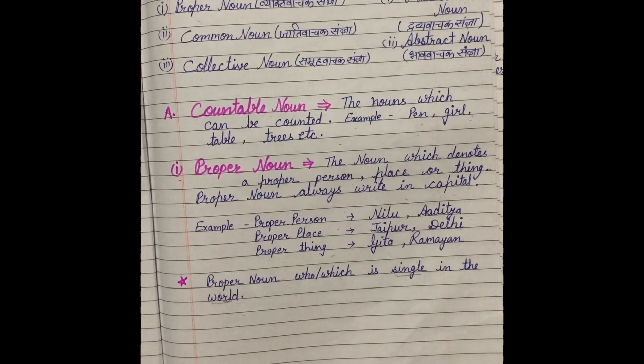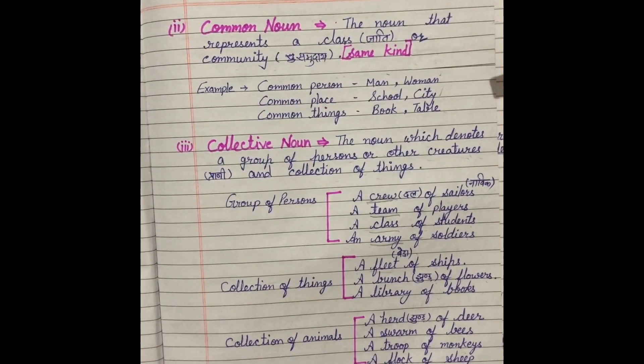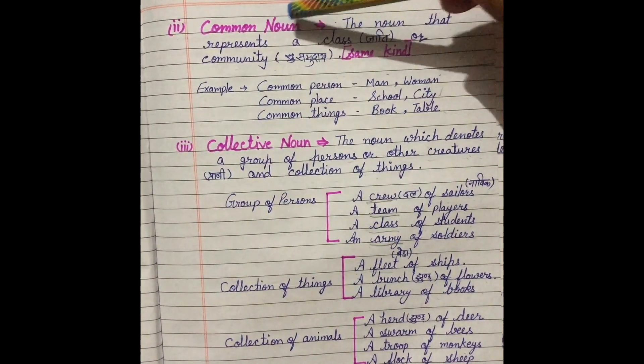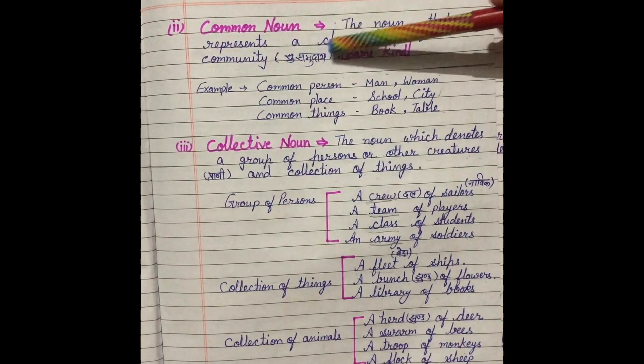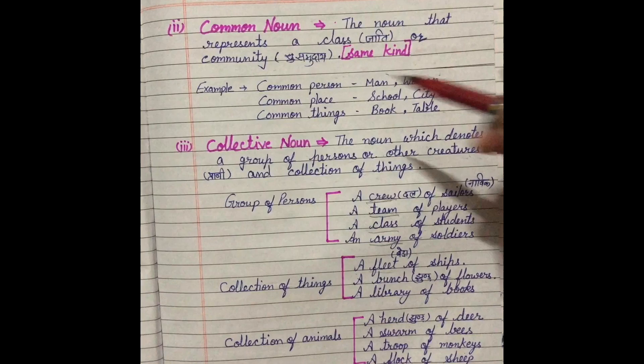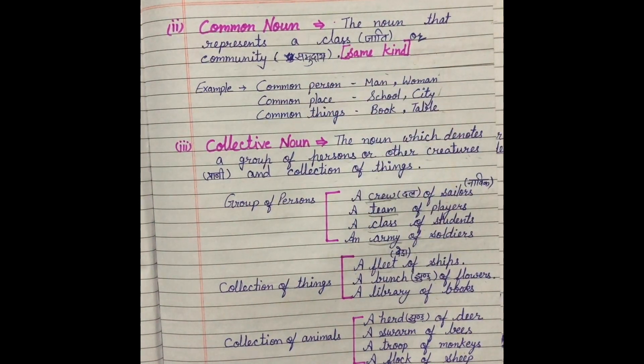Next is common noun, this is also included in countable nouns. Kyunki inhe bhi hum count kar sakte hain. The noun that represents a class, yani jati, or community, yani samudai. Same kind, jo ek hi jaisi cheeze hoti hain, ek hi jaise jo persons hoti hain, animals hoti hain, unhe represent karti hai.